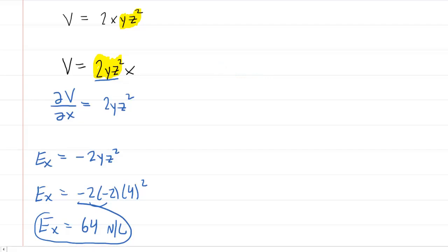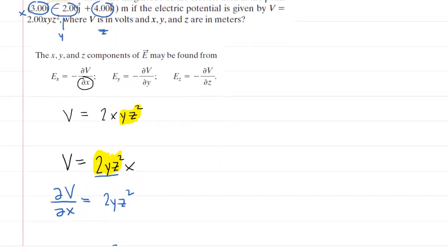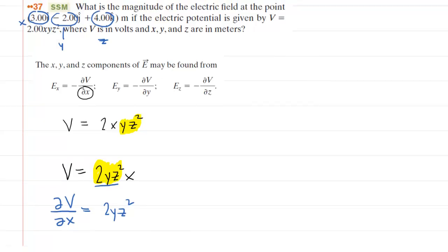We'll head back up and we'll do a similar procedure to calculate the electric field's y component. So the y component is going to be the negative of the partial derivative of the potential with respect to y. Once again, we'll write the electric potential equation here. And this time, we're calculating the partial derivative with respect to y. So that means the 2x and the z squared are the constants.